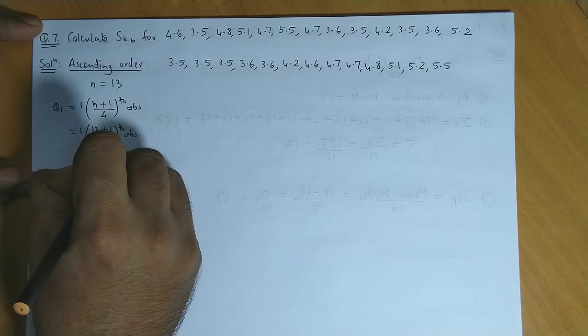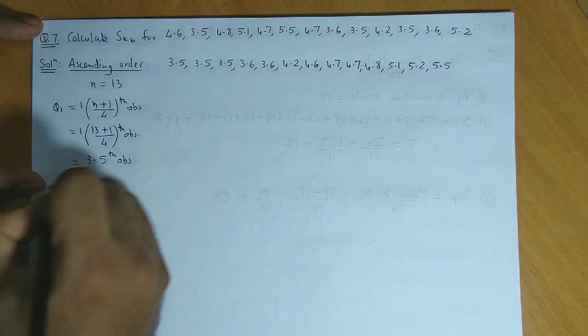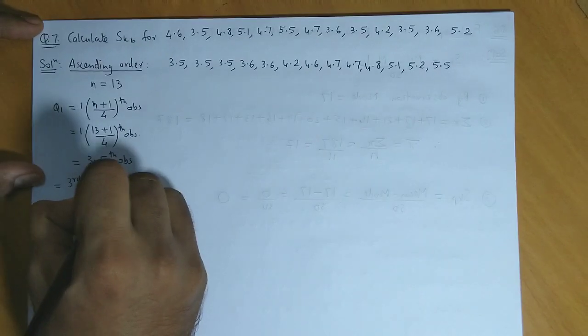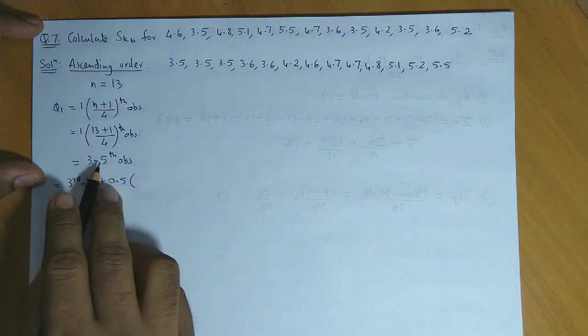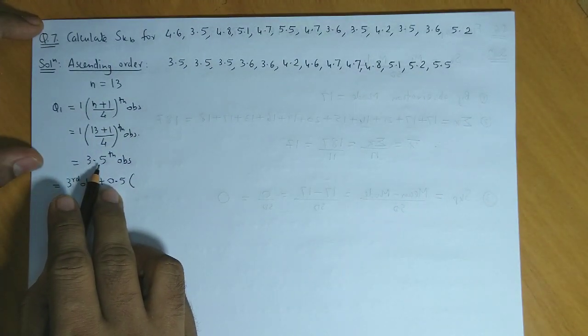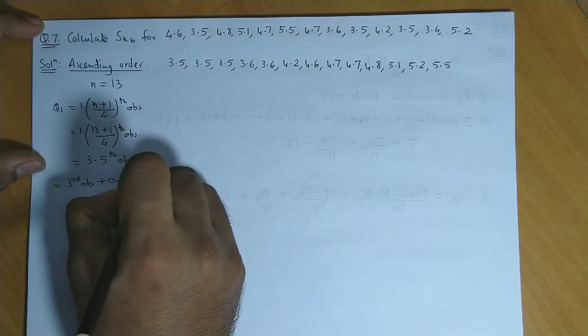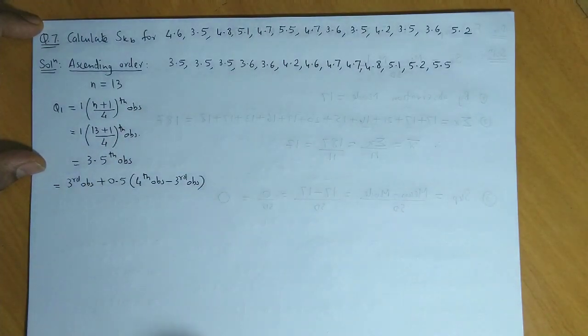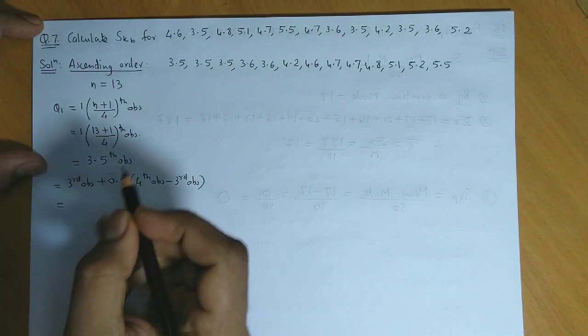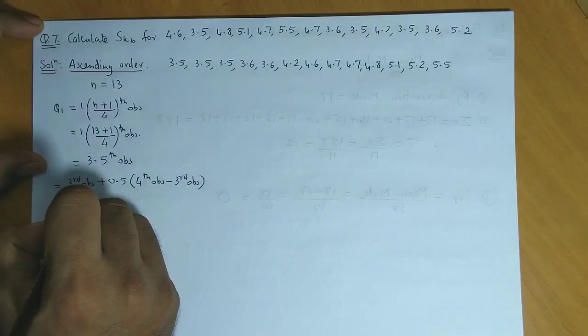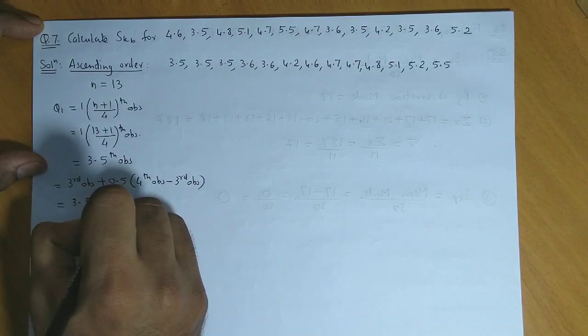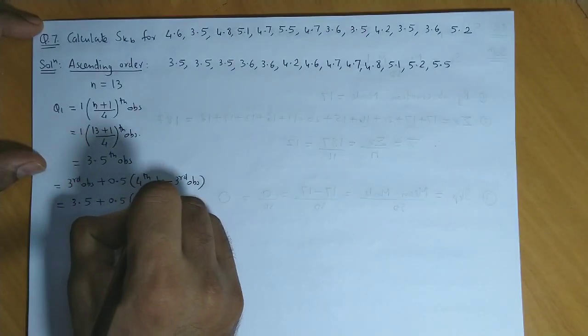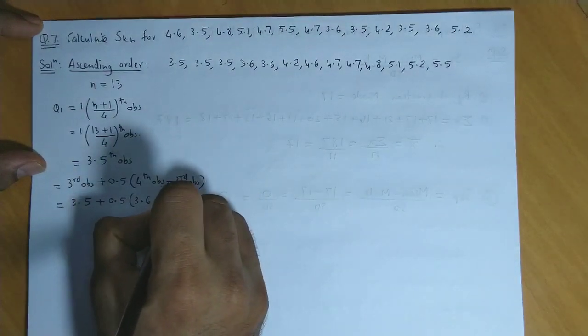So we have Q1 as the 3.5th observation, which we split as 3rd observation plus 0.5 into 3.5. Now 3.5 lies between 3rd and 4th observation. So its difference we write: 4th observation minus the 3rd observation.